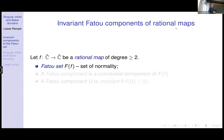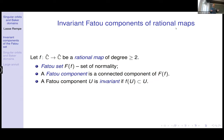The Fatou set is open, and we usually consider its connected components — a Fatou component is a connected component of the Fatou set. The complement of the Fatou set is the Julia set, where the dynamics is chaotic. A Fatou component is called invariant if it is mapped inside itself. Wandering domains are those that do not eventually map to a periodic component; this talk is about the opposite — invariant components of the Fatou set.